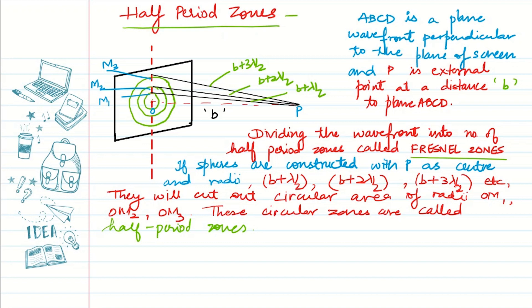Before starting with the zone plate, we will do a brief discussion about half period zones. ABCD is the plane wavefront perpendicular to the plane of the screen, and P is the external point at a distance of b. We will be dividing the wavefront into a number of half period zones. Taking P as our center, we draw concentric spheres of radius b plus λ/2, b plus 2λ/2, and so on, which cut out circular areas of radii OM1, OM2, and OM3. These circular zones are known as half period zones.